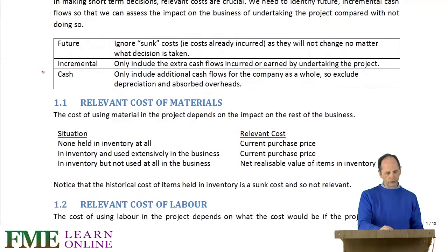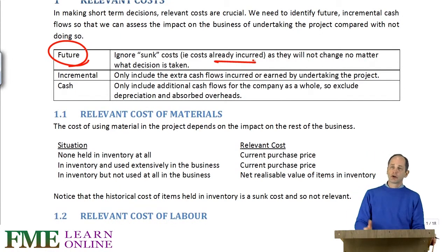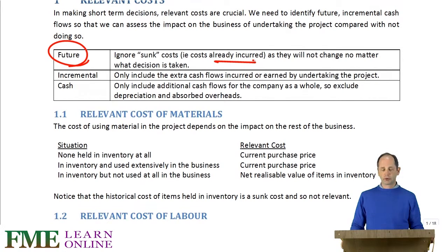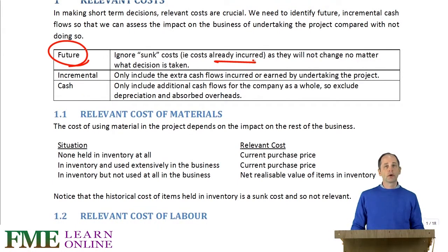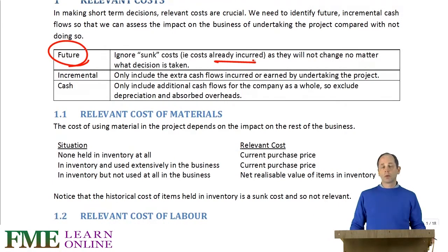To summarise: relevant costs need to be future. We're not going to take account of any costs which have already been incurred — technically called sunk costs — because they won't change whichever way we go with our decision. That also includes costs we haven't actually paid for yet but cannot get out of. So if we had incurred costs on development but hadn't paid a consultant's invoice yet, that is still a sunk cost, because whatever we do — go ahead or not — we cannot avoid paying that money. It's not a difference between the two possibilities.